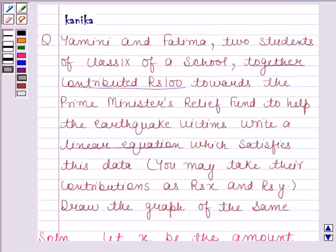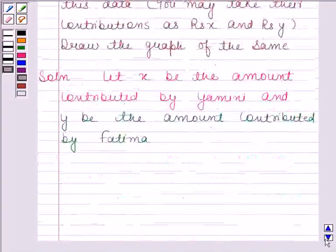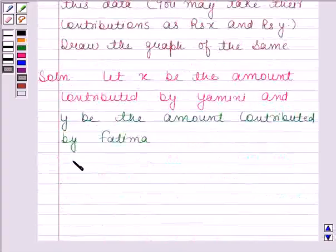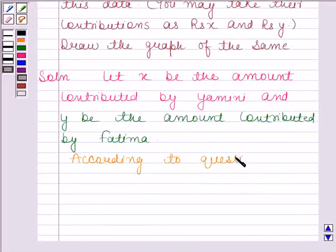In the question, it is given that they together have contributed Rs 100. That means the sum of their contribution is Rs 100. So according to the question, X plus Y is equal to 100. This is the required linear equation.